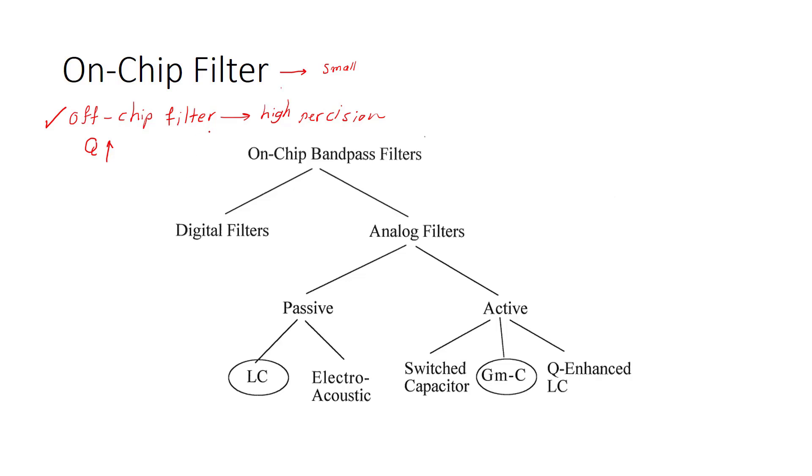There are also some other things. The connection of off-chip filter to our receiver is challenging. You have to consider the parasitics and everything. But on-chip filter is a bit easier in that case. So both of them have their own advantages and disadvantages.